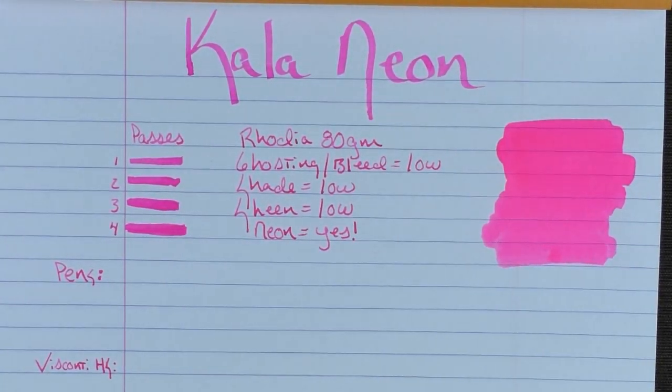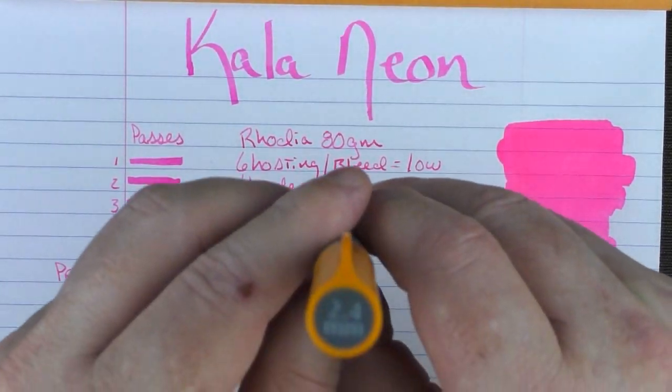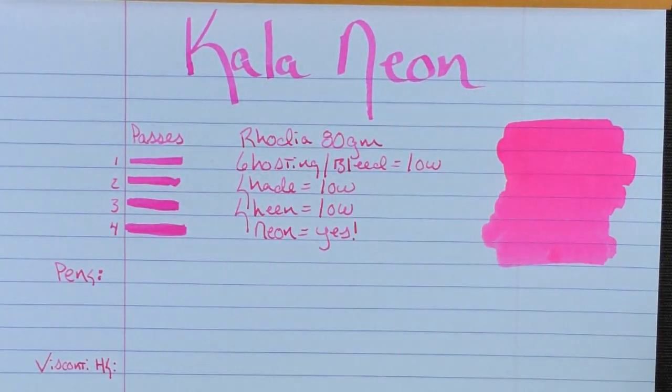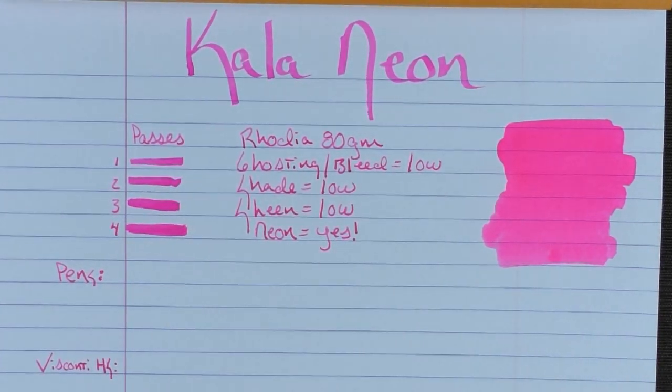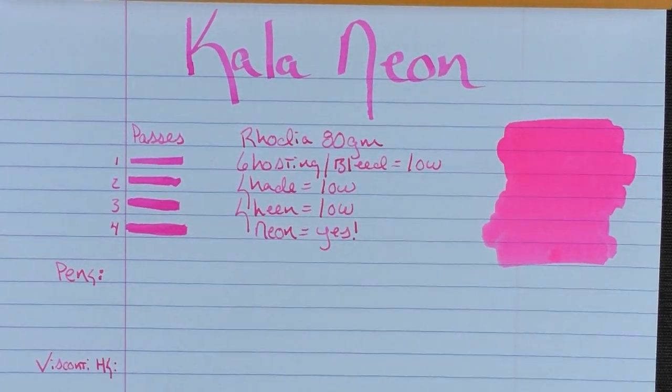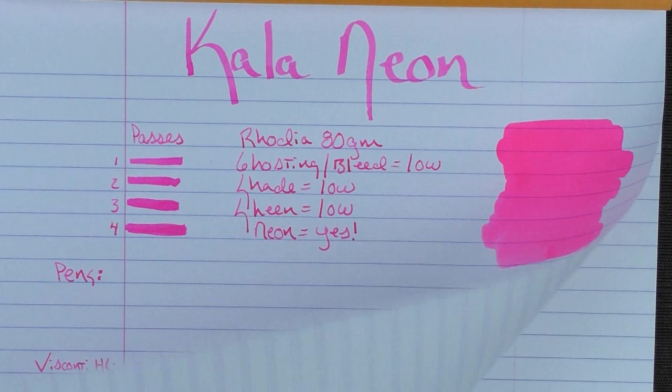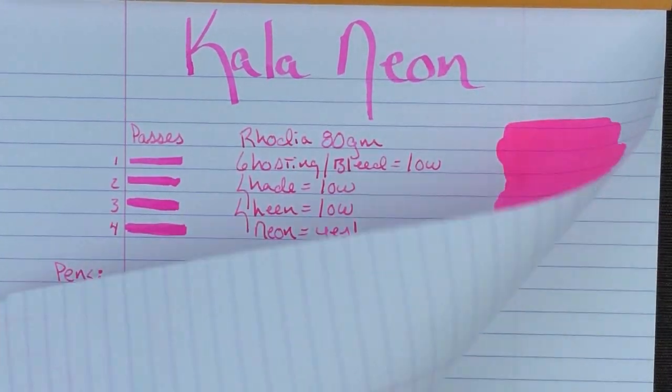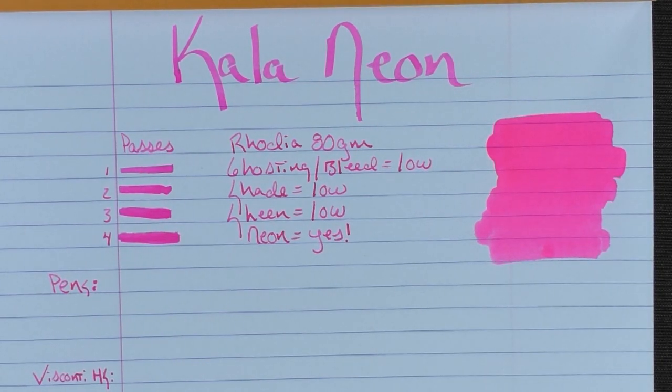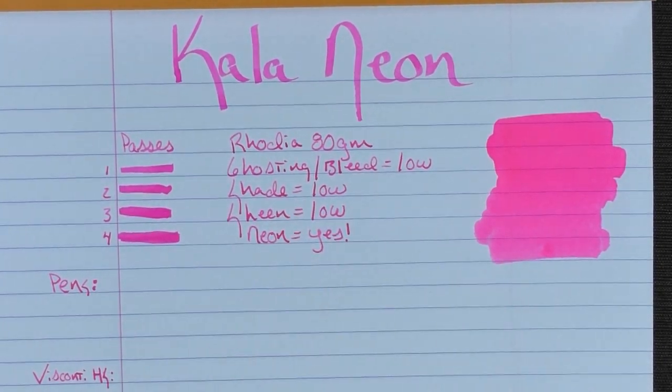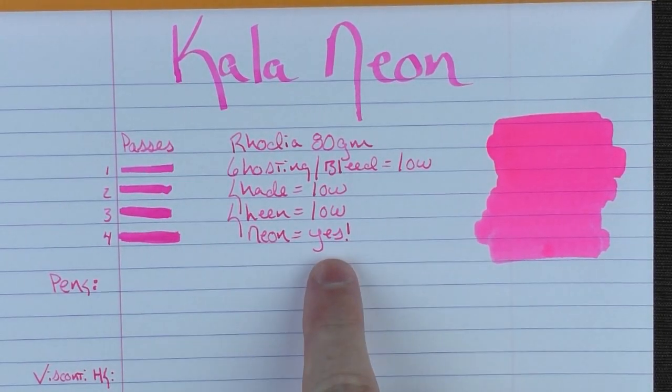So we have Kala Neon with a number of different passes here with this 2.4 millimeter Pilot Parallel. And you can see that this is a rather saturated ink. And so you don't get a lot of shading. This is Rhodia 80 gram paper. The ghosting and bleed is very low. You can see here, this is a pretty heavy application and there is virtually no ghosting or bleeding on this paper. The shade is rather low. The sheen is rather low and neon. Yes.